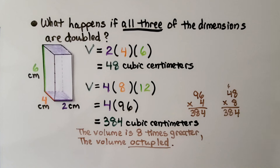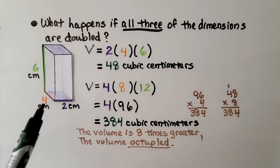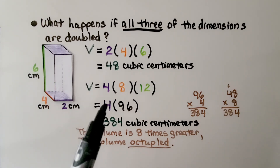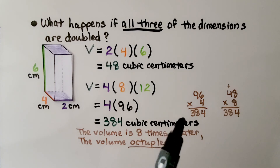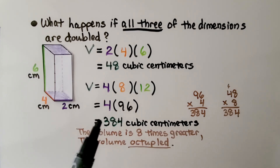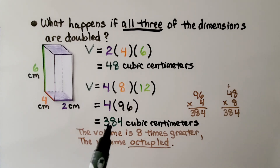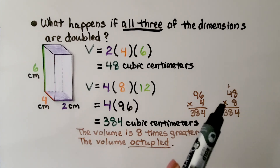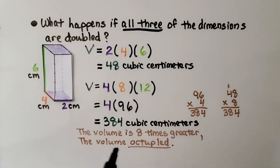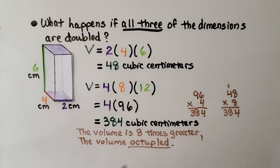What happens if all 3 of the dimensions are doubled? We double the 2 to a 4, the 4 to an 8, and the 6 to a 12. Now we have 4 times 96, which is 384 cubic centimeters. 384 is 8 times 48, so the volume is 8 times greater — the volume octupled.